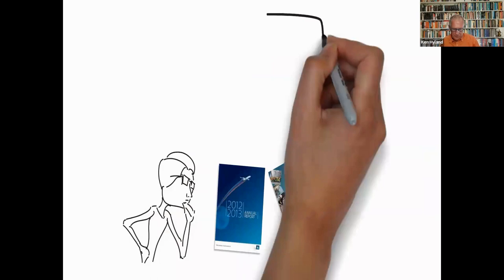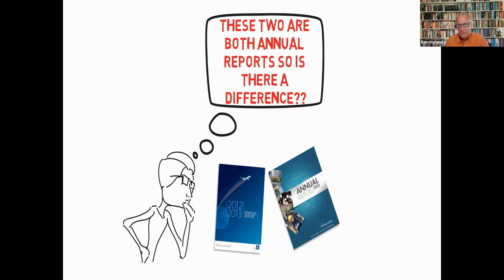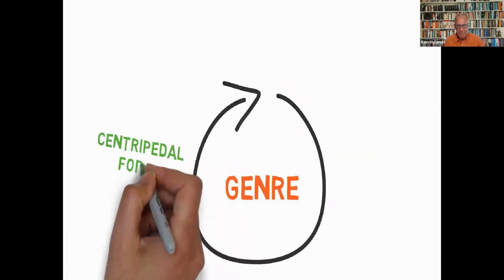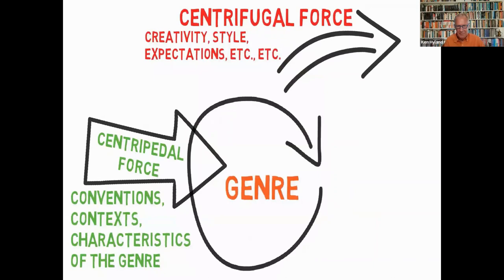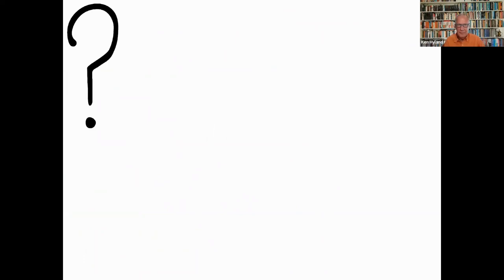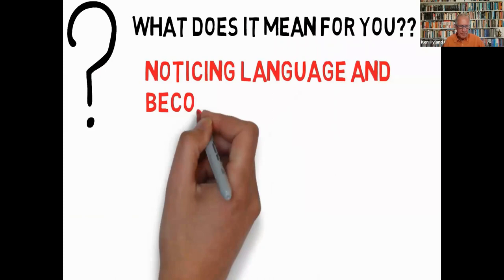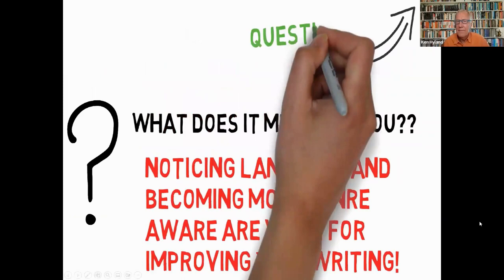However, there is a common misconception about genre: people feel there's an exact, prescribed way of writing a text, which is not true. No two films are exactly alike as different actors, directors and scriptwriters make big differences to the overall film. In texts, centripetal forces are the factors typical in any text, but there are always centrifugal forces such as creativity, writer styles, and different audience expectations, meaning no two texts are exactly alike. A big part of developing your evaluative capabilities is to become more aware of genre and notice features of language that good writers use — this is vital for helping you develop as a skilled writer who can write different texts that meet the expectations of various audiences.